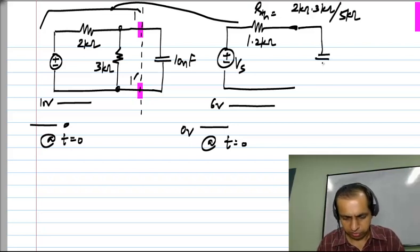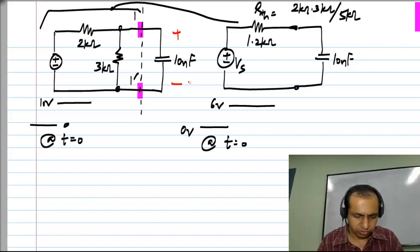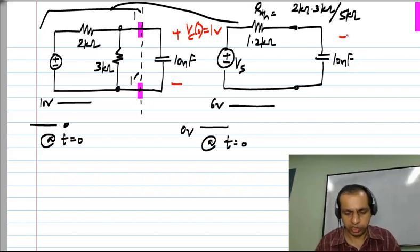And we have a capacitor which is 10 nanofarads. So this is now the familiar circuit. Now, whatever initial condition is there on the capacitor will still remain. So let me say that the initial condition is 1 volt. It happens to be there at T equal to 0, just before the step is applied, this has 1 volt.